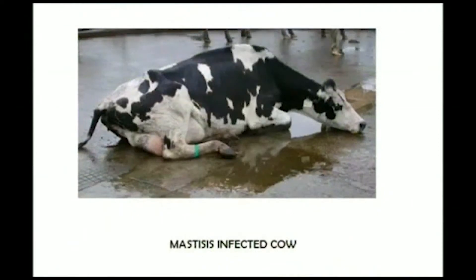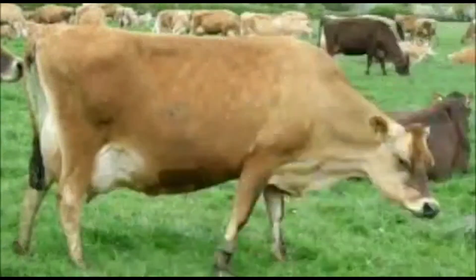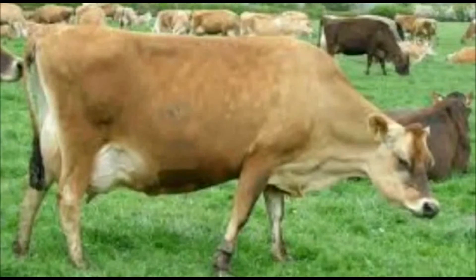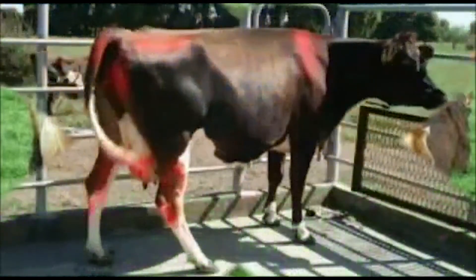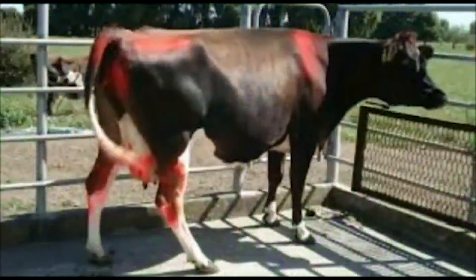Another important problem is mastitis, a major epidemic contagious disease. It leads to a reduction in milk production. Failure to treat mastitis can lead to eventual loss of the mammary gland, which leads to death. A mastitis-infected cow has high body temperature, and it is confirmed by measuring the electrical conductivity of milk.